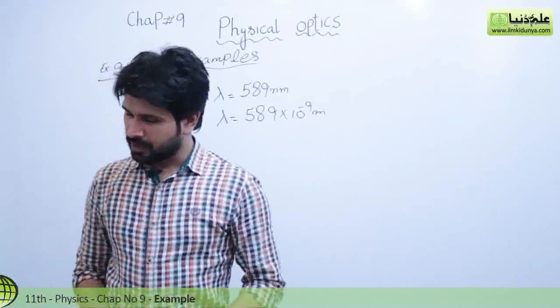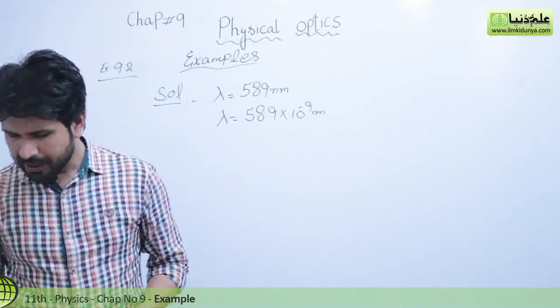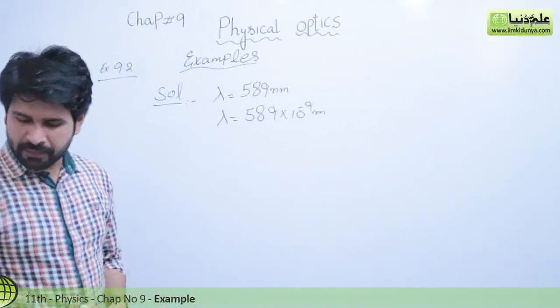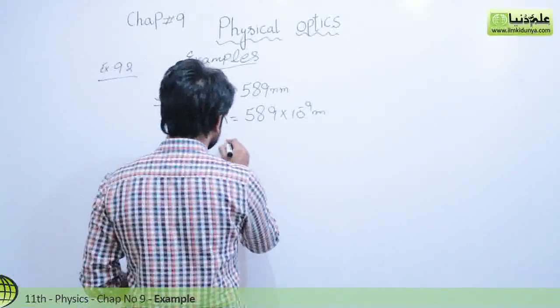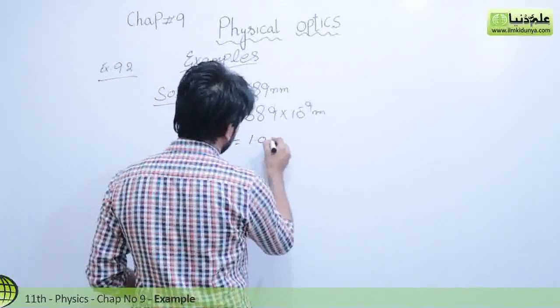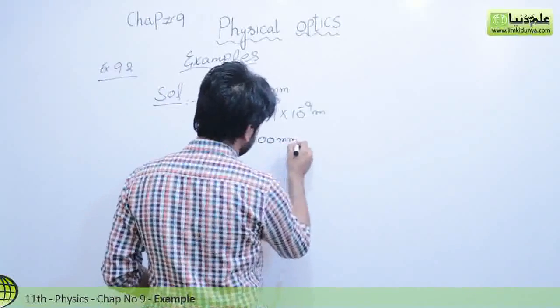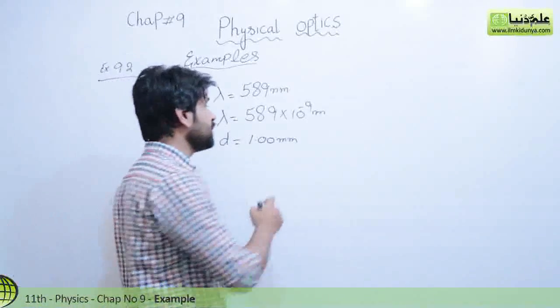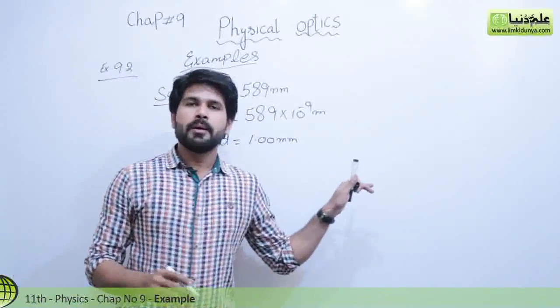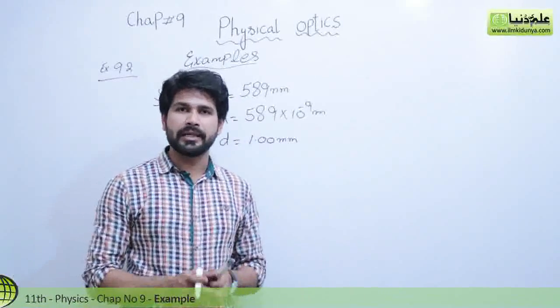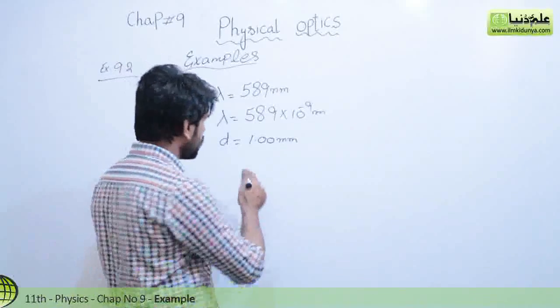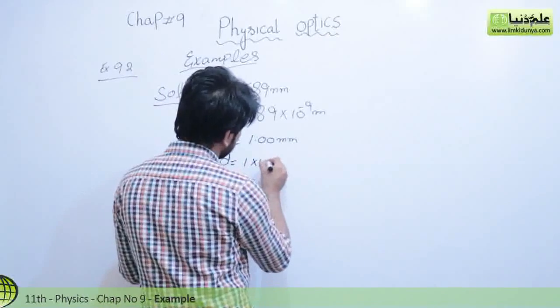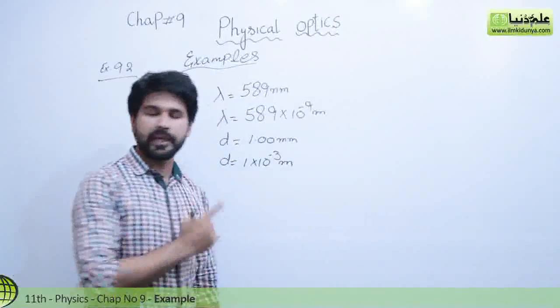The other thing given is the slit spacing, the distance between two slits, d, which is given as 1.00 millimeter. You know very well that 1 millimeter equals 10 raised to power minus 3 meter. So you can write this d as 1 into 10 raised to power minus 3 meter.